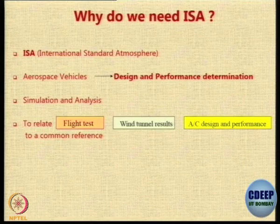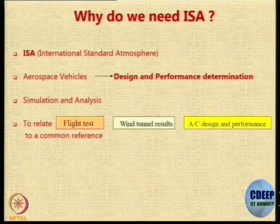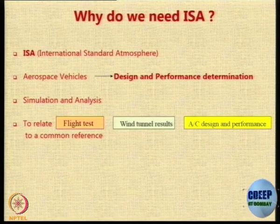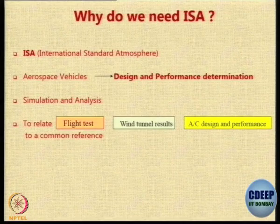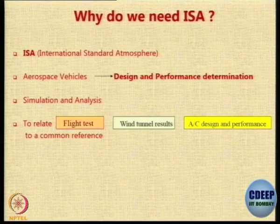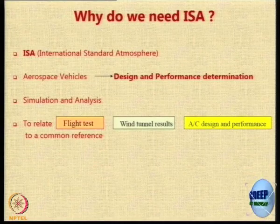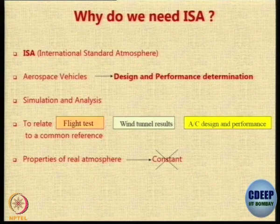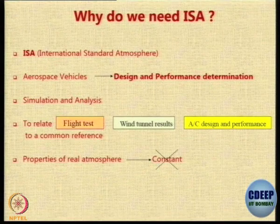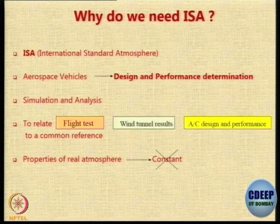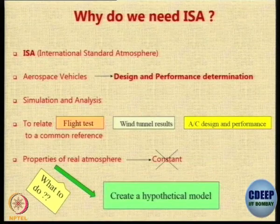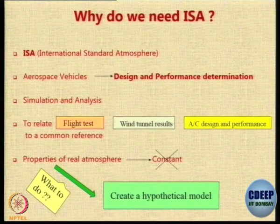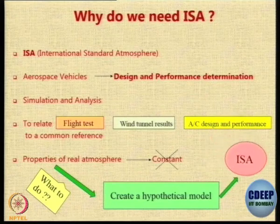If you do not do normalization, then you have these problems. When we do simulation, analysis, etc., we need some kind of normalization to relate three things: flight test happens in a real atmosphere, wind tunnel testing happens in a laboratory in a different atmosphere, and the aircraft performance and design is quoted in the manual for yet another set of conditions. To have a common reference, all data is reduced to the ISA condition so that there is uniformity.